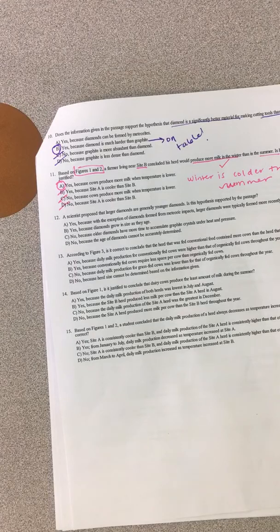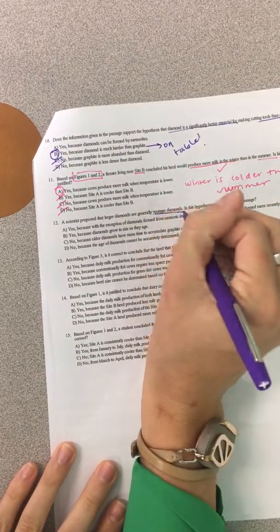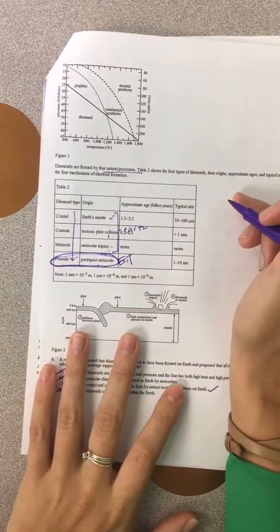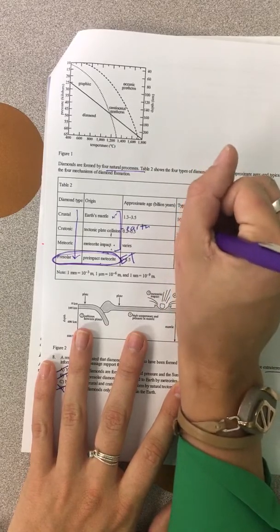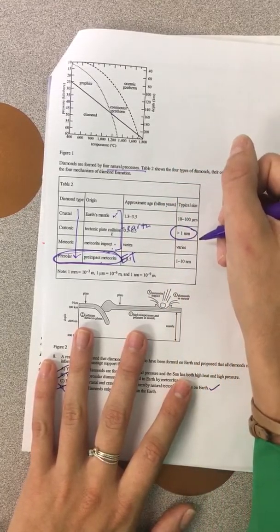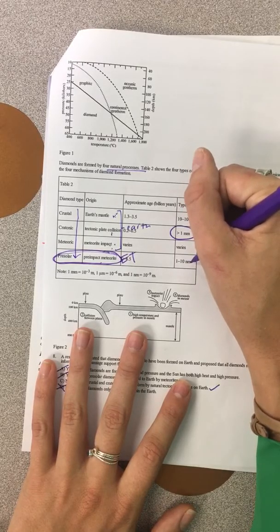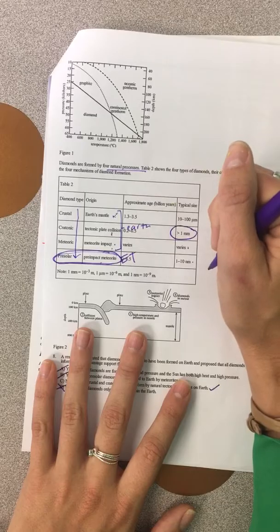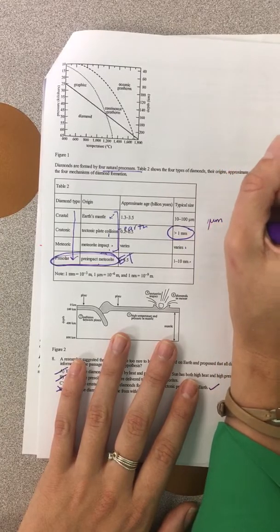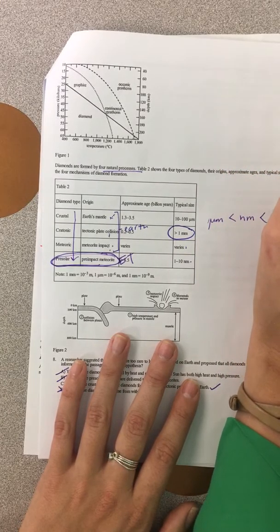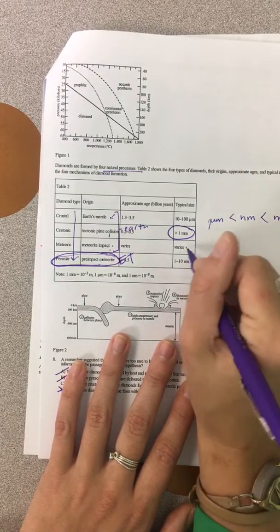Alright, a scientist proposed that larger diamonds are generally younger diamonds. So larger is younger, is this supported by the passage. So now we're going to go to the diamond passage. Now let's see. Larger diamonds are younger. So let's see. These are the biggest. Larger than one millimeter. So these are your biggest. But then also we have varies. And then these are a little bit bigger. So our youngest diamonds here are actually our biggest. Right? Because it goes micrometer, nanometer, millimeter. That's our biggest one. But then we also have varies.